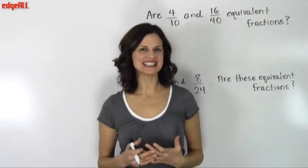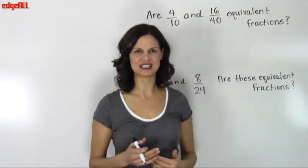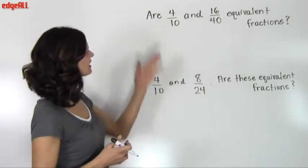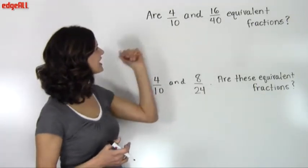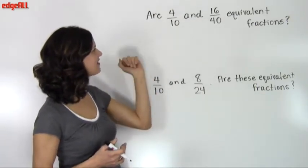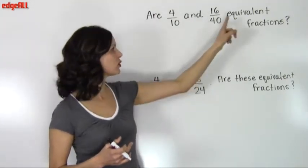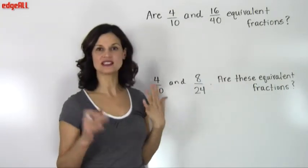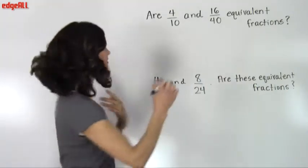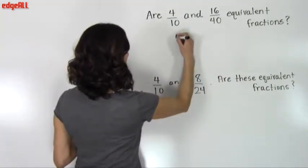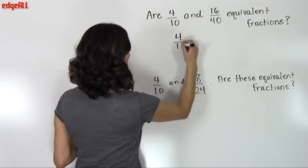Let's look at a couple more examples of finding equivalent fractions. So in our first example, the question asks us, are 4 tenths and 16 fortieths equivalent fractions? And so we're going to start by lining up our two fractions. So I'll write 4 over 10 here.